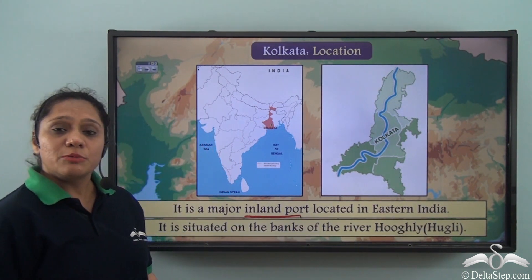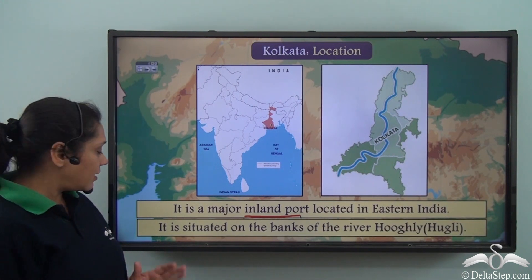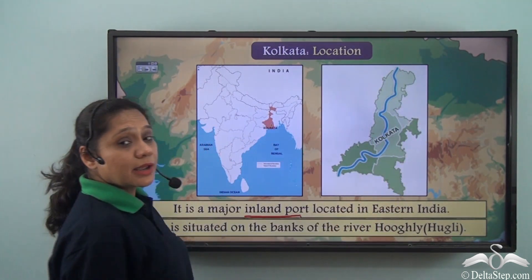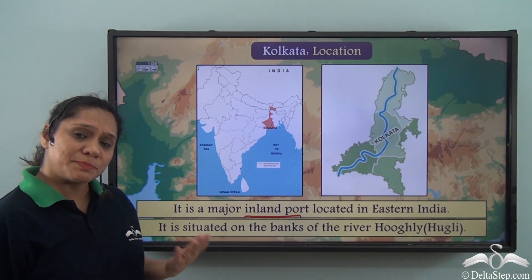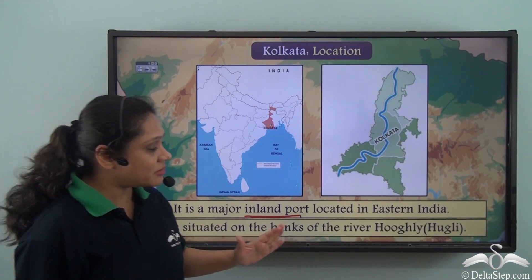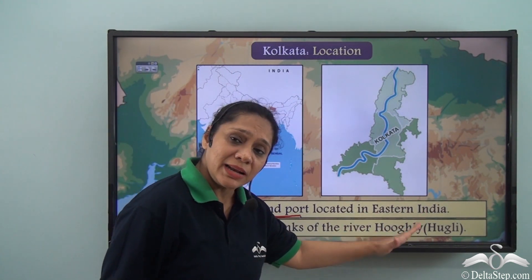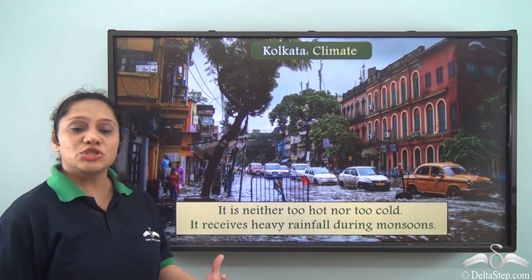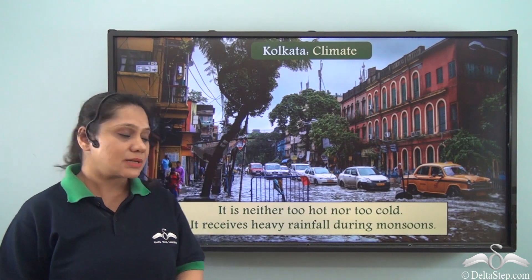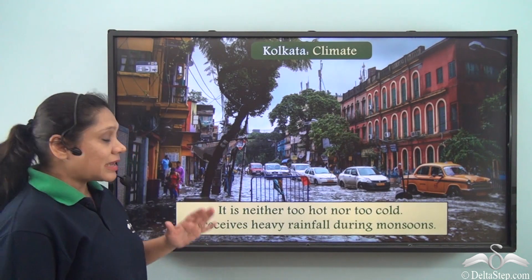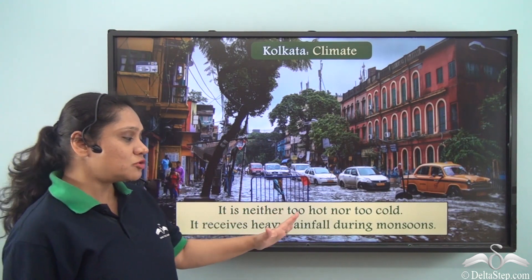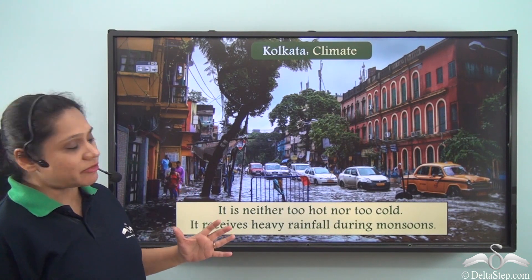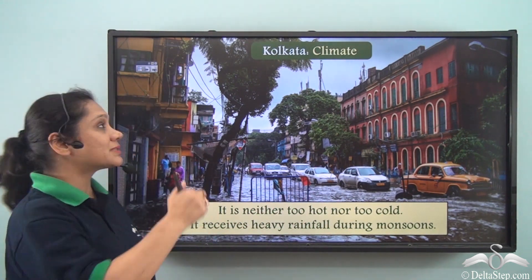Kolkata is a major inland port situated in eastern India, on the banks of the River Hooghly. You may find two spellings of this river — both are accepted. The climate of the city is neither too hot nor too cold, but it receives heavy rainfall during monsoons.